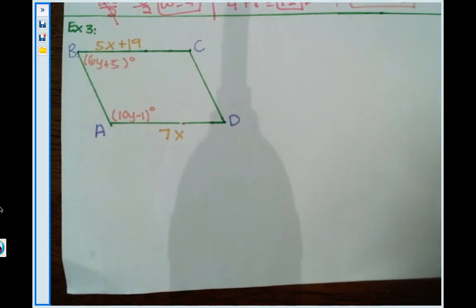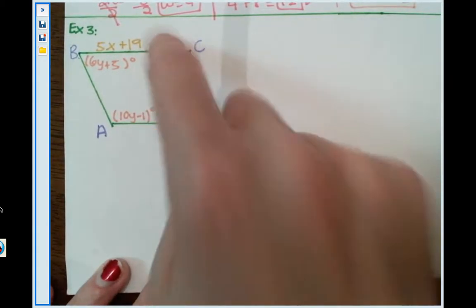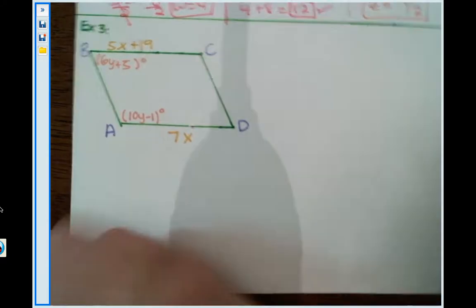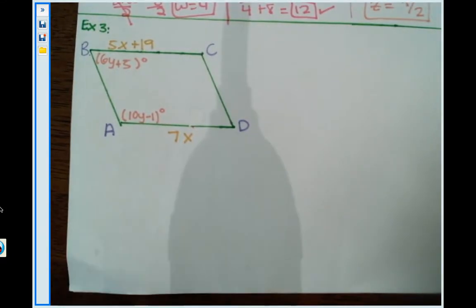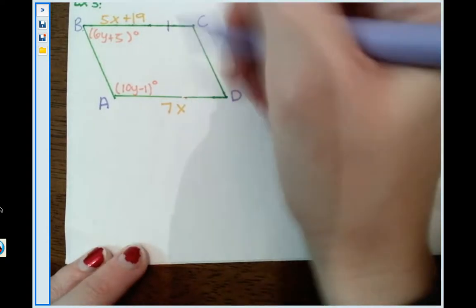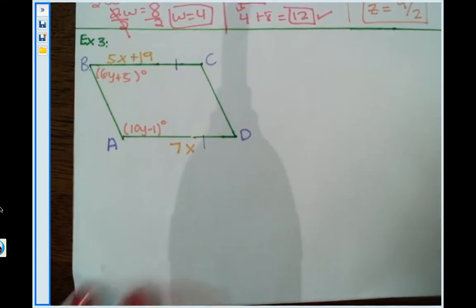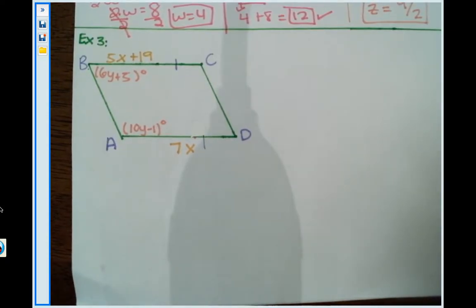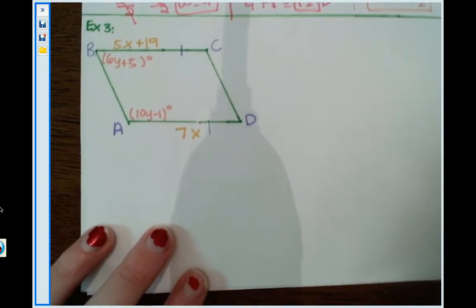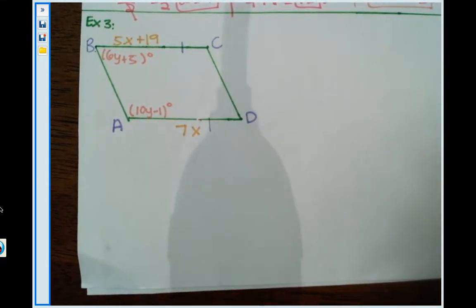So why don't we start with the side lengths. So I have two sides that are right across from each other. How do opposite sides of a parallelogram relate to each other? They are congruent. So this one is congruent to this one. So when we solve for this one, we need to set these bad boys equal to each other because they are congruent.